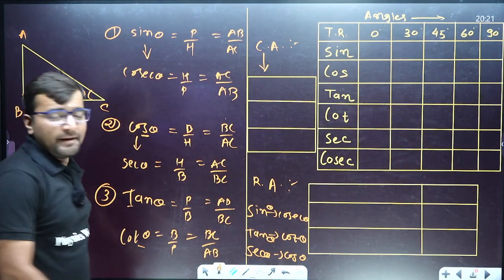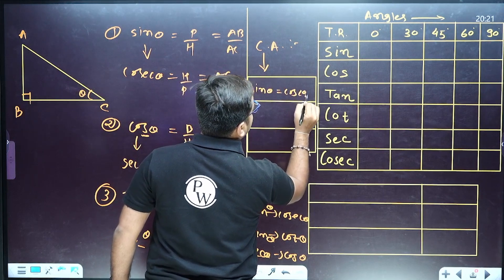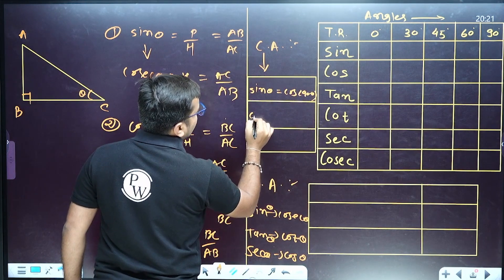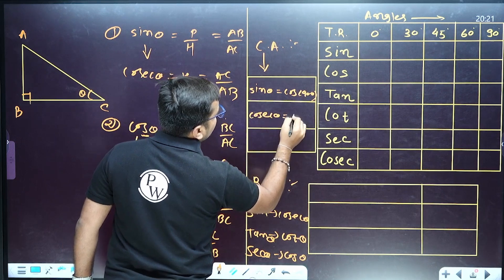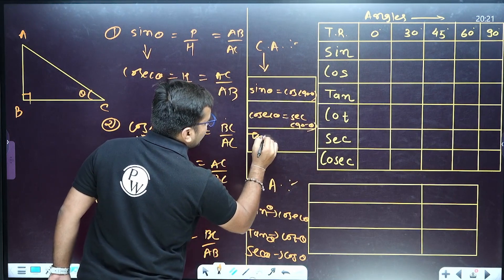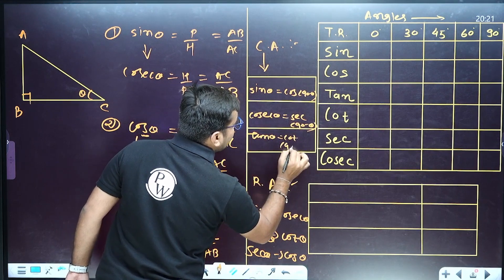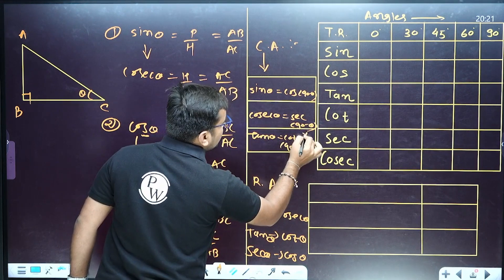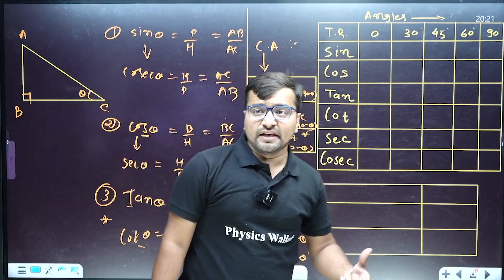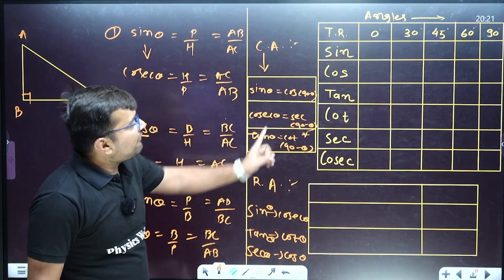Now let's discuss complementary angle pairs. Complementary means two angles whose addition equals 90 degrees. Sin theta equals cos(90 minus theta), sec theta equals cosec(90 minus theta), and tan theta equals cot(90 minus theta). One beautiful thing to note is that cot and tan are both reciprocals of each other and also complementary to each other.